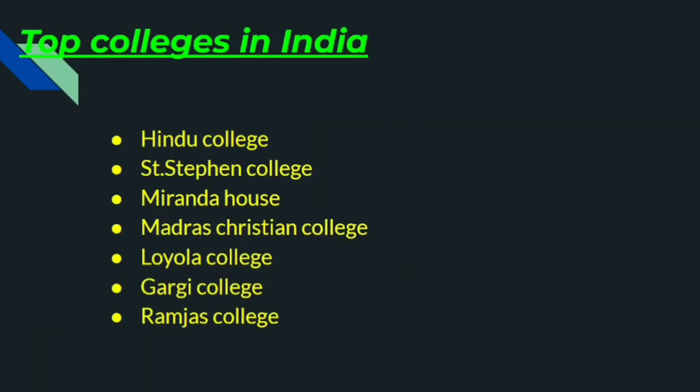Now let's discuss top colleges in India for BA Statistics. The first is Hindu College, second is St. Stephen's College, third is Miranda House, fourth is Madras Christian College, fifth is Loyola College, sixth is Gargi College, and seventh is Ramjas College. These are the top colleges in India — many of them are part of Delhi University (DU).